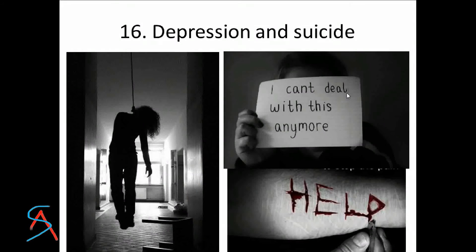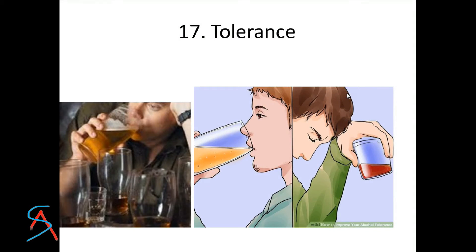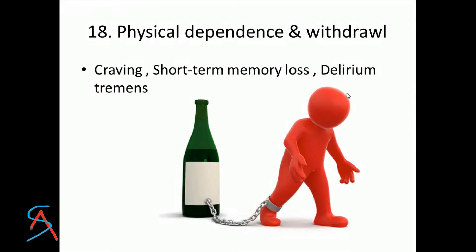Severe anxiety is another effect. Alcohol can result in severe depression, which can lead a person to suicide. With alcohol, you initially need one glass to get high, but slowly you need more because you develop tolerance. Physical dependence and withdrawal is one of the worst side effects — the person becomes so dependent they cannot function without alcohol. When trying to quit, they feel cravings, short-term memory loss, or delirium tremens with seizures, which can be a medical emergency.